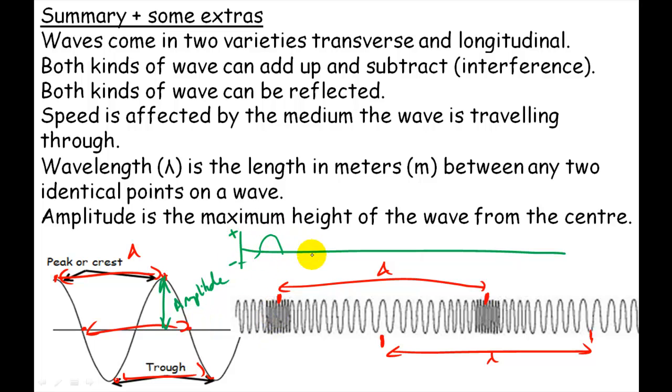And it would be lower pressure in the other parts. So higher pressure and lower pressure. And then you could measure the amplitude of that wave, and that would be the amplitude for that.